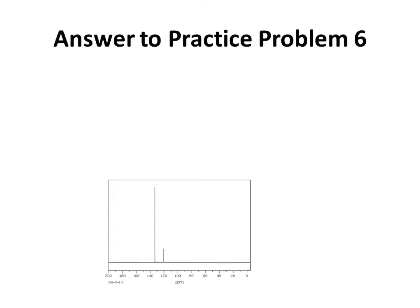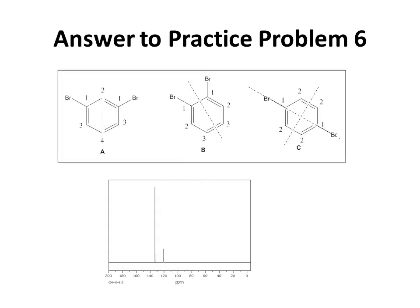In the answer to Practice Problem 6, the first thing is to find how many unique carbons there are in each isomer. In isomer A, there is a plane of symmetry — like a mirror plane — that cuts right through carbons 2 and 4, making the carbons attached to the bromines (carbon 1) identical to each other, and carbon 3 identical to each other. The two carbons in the mirror plane, carbon 2 and carbon 4, are also unique, giving a total of four unique carbons.